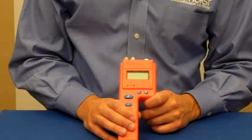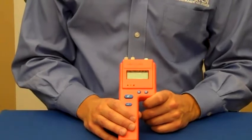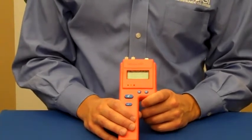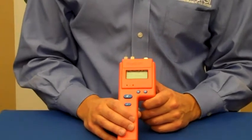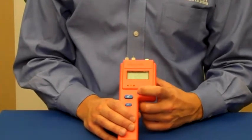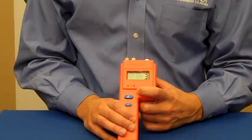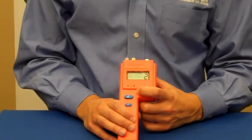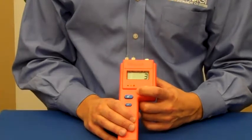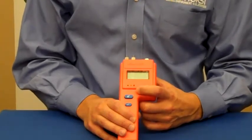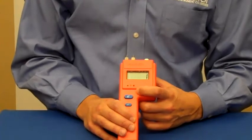The drywall scale is a Delmhorst exclusive, and it really helps obtain better readings on the drywall because it's giving an actual percentage rather than a relative reading. To access those scales, you simply press the asterisk button and just choose among 1, 2, or 3. 1 being the wood scale, 2 being the reference scale, and 3 being the drywall scale.